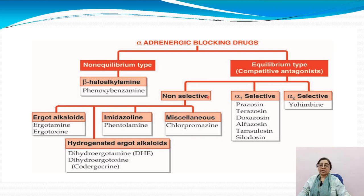In the non-selective group: first is ergot alkaloids — ergotamine and ergotoxin. From ergot alkaloids, the hydrogenated ergot alkaloids are dihydroergotamine and dihydroergotoxin. The third group is the imidazoline group — phentolamine — and miscellaneous includes chlorpromazine. These are all non-selective alpha adrenergic blocking agents.